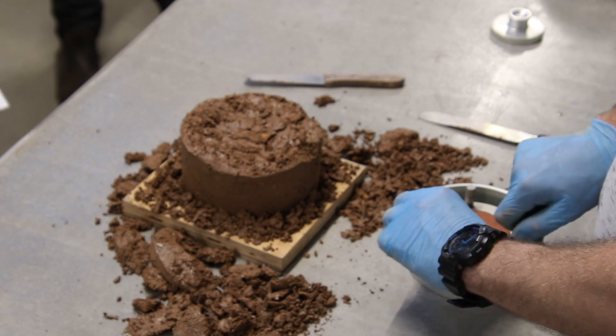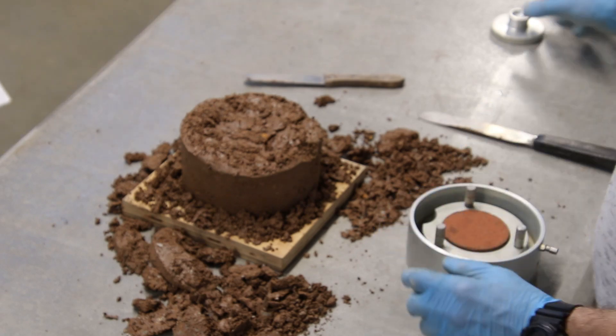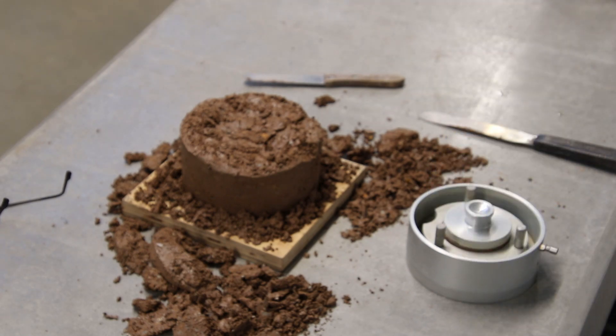Place the whole ring assembly with the sample and confining ring into the odometer cell with the tapered edge facing down. Line up the three screw holes as shown. Take care not to cover the drain hole.